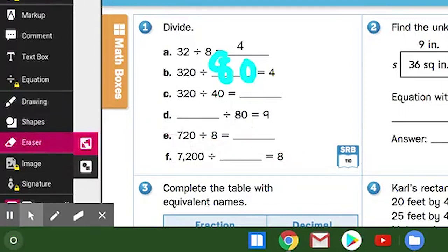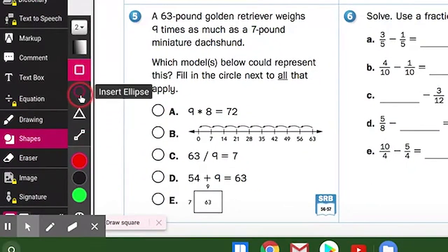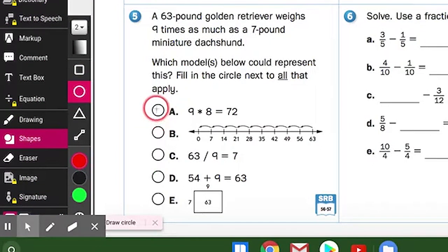Once you go to shapes, you can click any shape you want. You're going to have to use your cursor to make it bigger and adjust the size and move it around. You click and drag to make the circle or whatever shape you want, and then you can also move it.